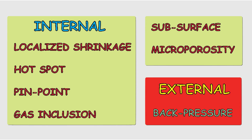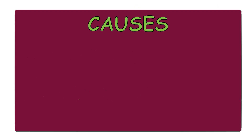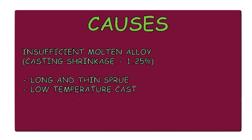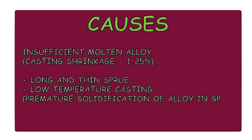Let's first start with localized shrinkage porosities. The cause of localized shrinkage porosity is insufficient molten alloy. This may be due to casting shrinkage, which is approximately 1.25 to 1.75% for gold alloys and about 2.2% for base metal alloys. It may also be caused by a long and thin sprue, which restricts the amount of molten alloy. Low casting temperature may also lead to localized shrinkage porosity, as premature solidification of the alloy in the sprue can occur.